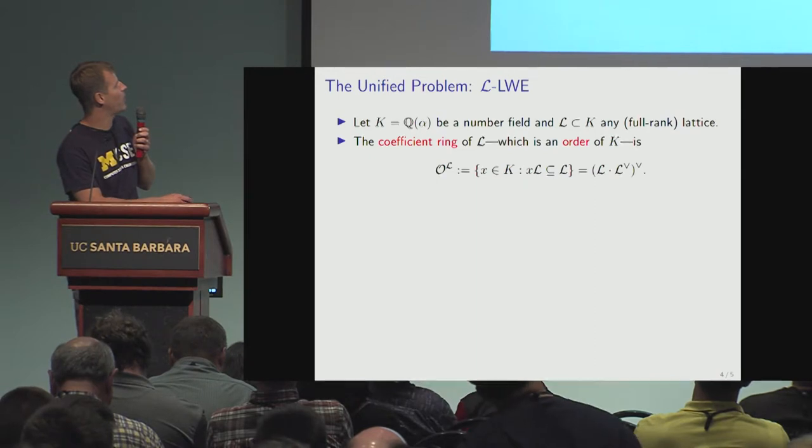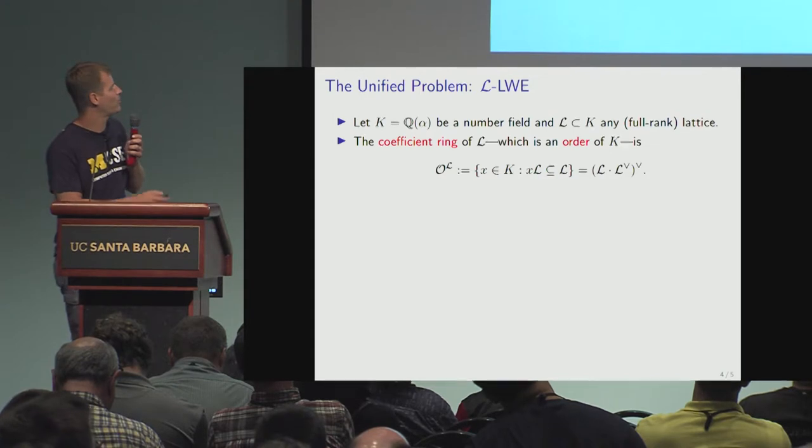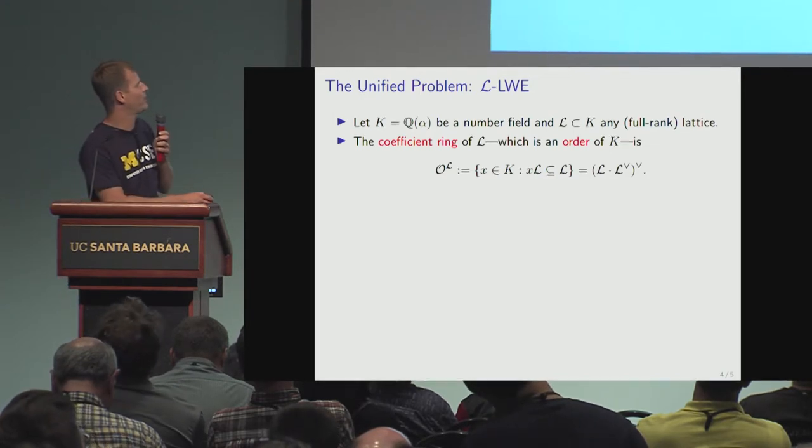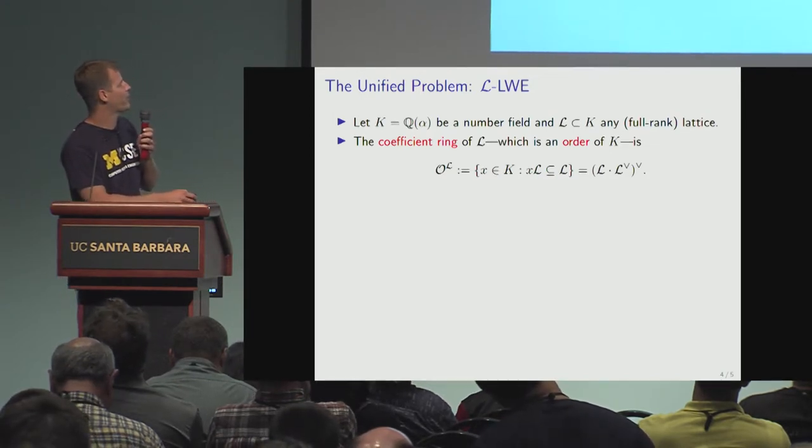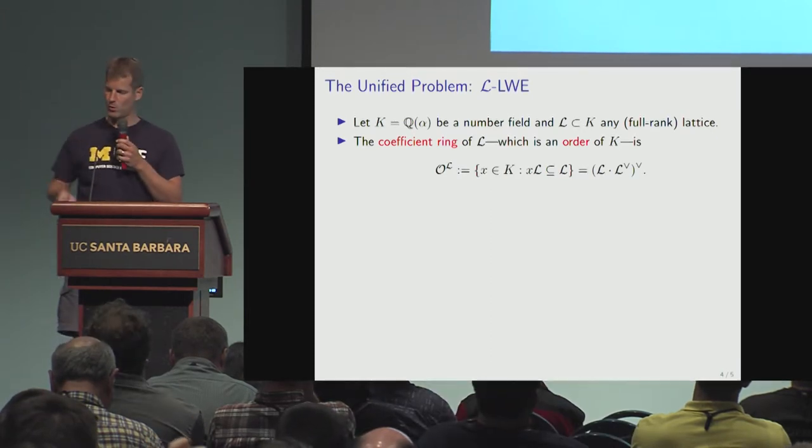It's just all the elements of the number field by which L is closed under multiplication. Pretty simple definition. It can be defined as an annihilator of L or something like that, and it's easy to prove it has this form where these little V's are duals.